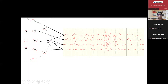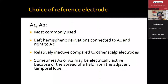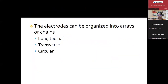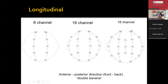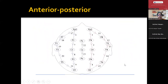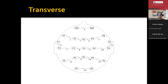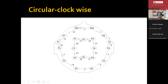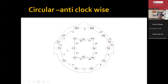If here the maximum is showing at F4 — all connected to A2 — then the choice of reference electrode is either A1 or A2 mostly. But we avoid this in temporal lobe epilepsies and we avoid CZ in sleep-related epilepsies. These electrodes can be organized into longitudinal, transverse, or circular montages. The double banana montage — the longitudinal montage — is where they are connected longitudinally. We also have the transverse montage, where you connect all electrodes transversely. Circular montage can be clockwise or anticlockwise. All these are now programmed within the machines — the moment you go to that montage, the EEG automatically changes.